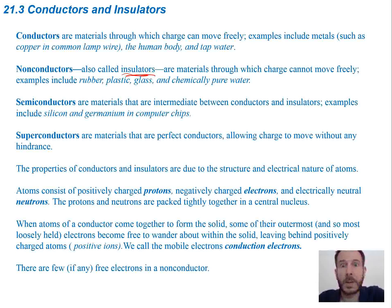A couple things to think about when we're talking about atoms. Why are conductors conductors and why are insulators insulators? Well, it's the setup of the atoms. When you have a bunch of conducting materials put into a solid, it's going to allow the flow of electrons in that solid, and that's what allows conductors to have a flow of electricity. When atoms of a conductor come together to form a solid, some of their outermost, so they're loosely held electrons, become free to wander about the solid. So that leaves behind positively charged ions.